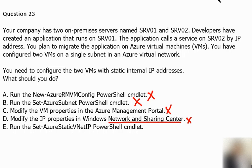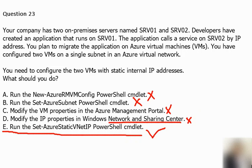That leaves us with option E, which is the correct answer. Option E sets the static VNet IP address information for the virtual machine object. So E is the correct answer.